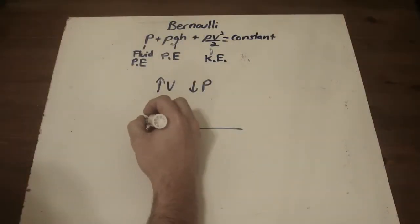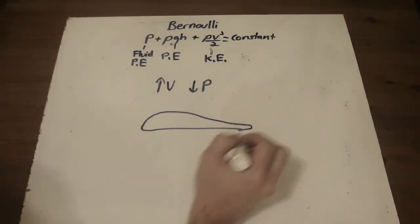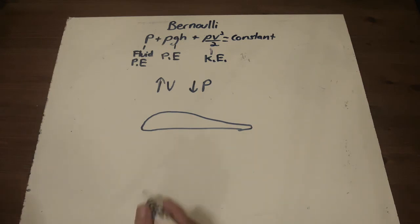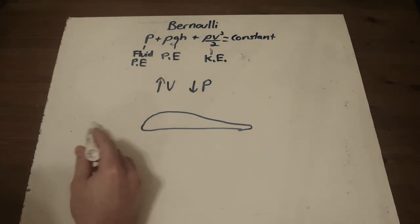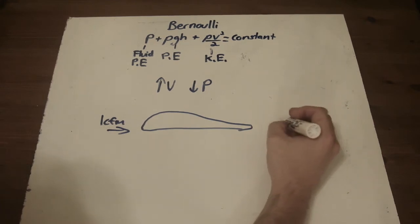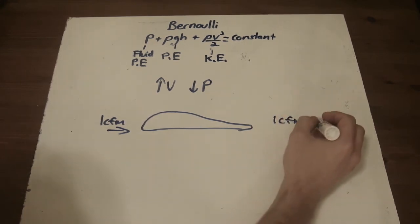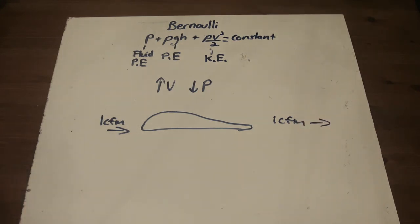So one of the big concepts we can look at is flight. So let's look at an airplane wing and see how we can apply Bernoulli equation. So we have our wing, classic shape, and we have a mass flow rate or a volumetric flow rate. So we have one CFM. In the beginning here, it's going over this way. We have one CFM out. So volumetric flow rate is consistent.